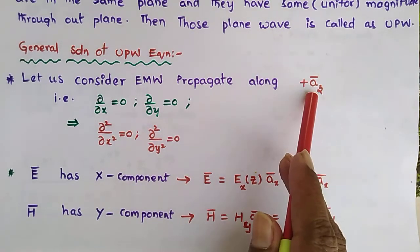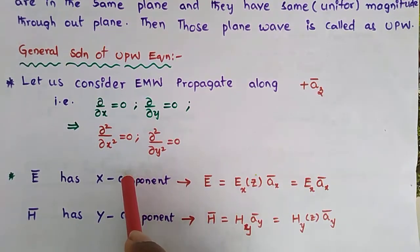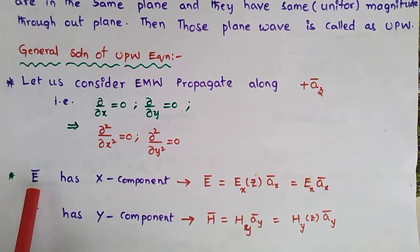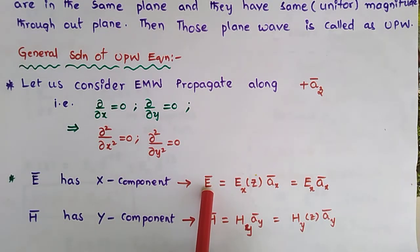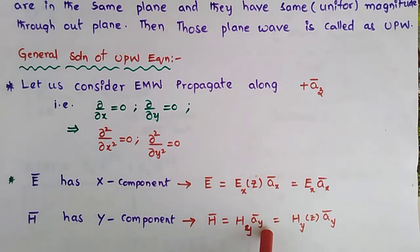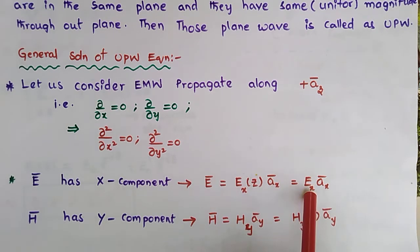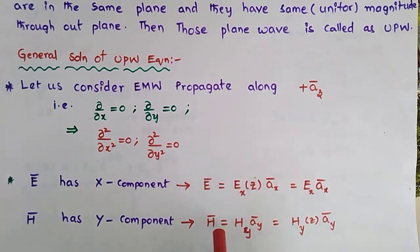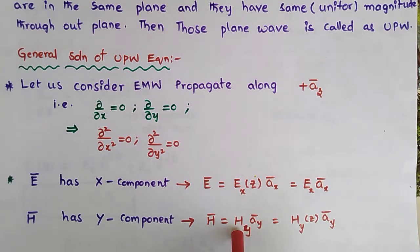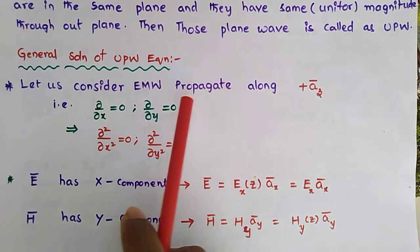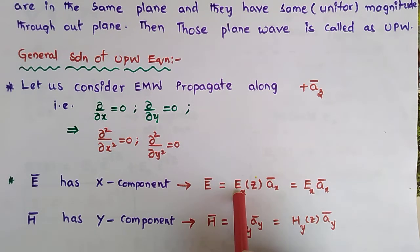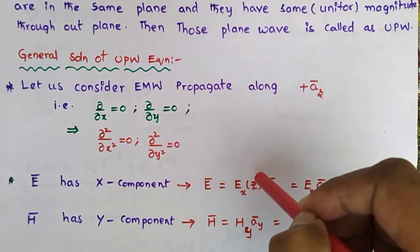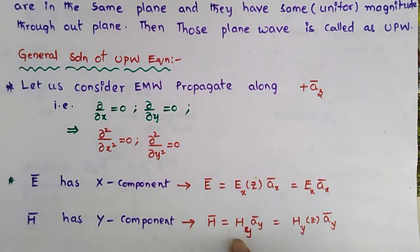The electric field is in the x-direction — it is a vector. The magnetic field is in the y-direction, with its magnitude in the y-direction. The wave propagation direction is the z-direction, so the E magnitude is in the z-direction. Similarly, H is in the z-direction.